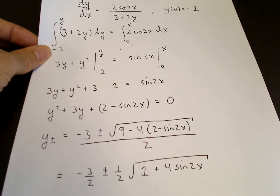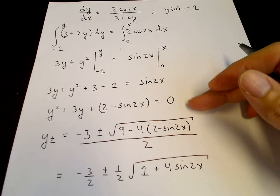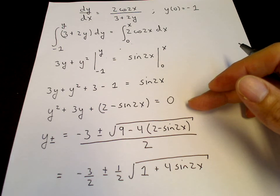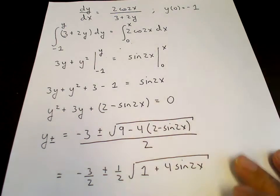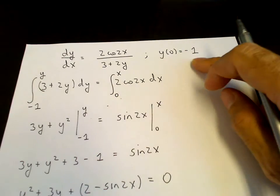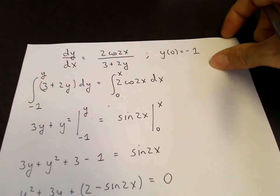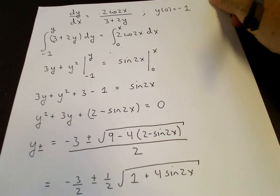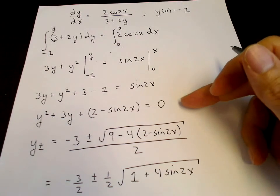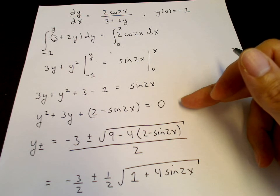But we end up with two solutions. Why do we have two solutions? We end up with a quadratic equation, which has two roots. It turns out that there are two initial conditions. There's another initial condition between y, besides y of 0 equals minus 1, which we'll see is y of 0 equals minus 2. That will result in the same quadratic equation.